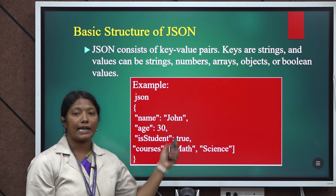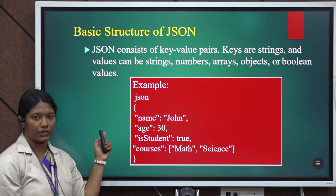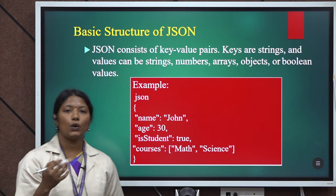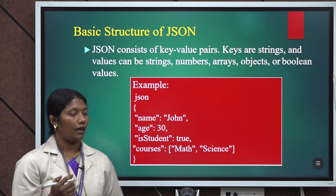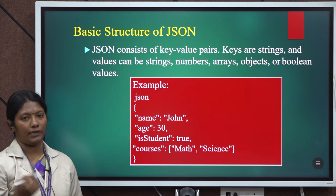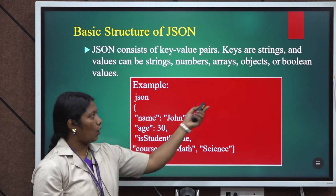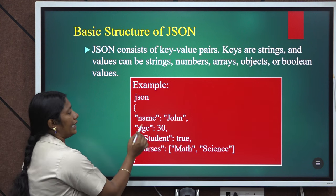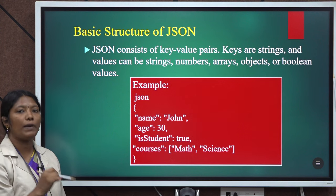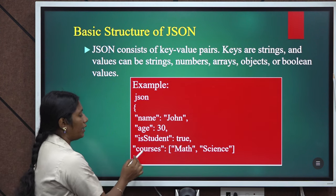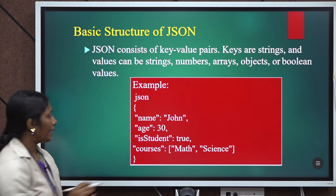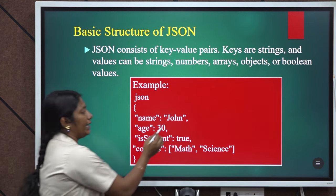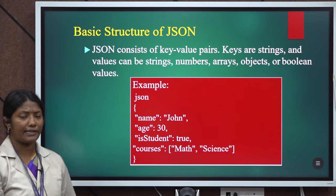Now we are going to see the structure of JSON. Every JSON object is surrounded by curly braces and consists of zero, one, or more key-value pairs. Keys are strings; values are dynamic — they may be numbers, arrays, objects, booleans, and so on. Each key-value pair is separated by a comma. Here, name, age, student, and courses are keys — all strings — and John, 30, true, math and science are the values. It is dynamic, so it can be strings, numbers, arrays, or more.